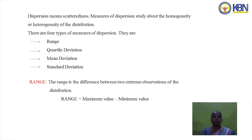Measures of dispersion refers to the scatteredness of data. It studies the homogeneity and heterogeneity of the distribution. There are four types: range, quartile deviation, mean deviation, and standard deviation.